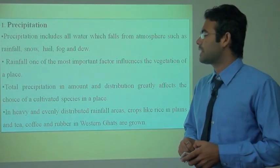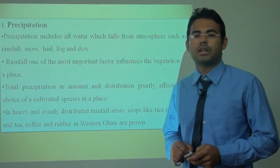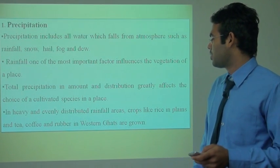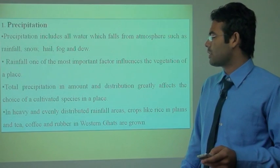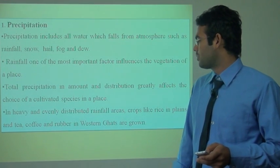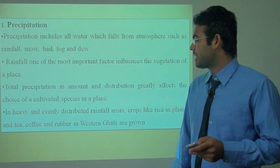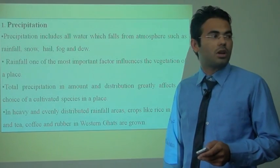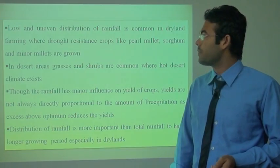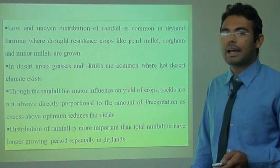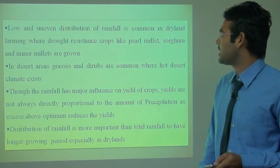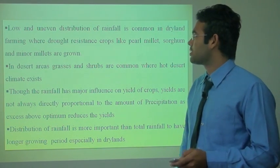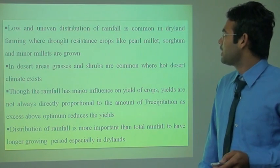The crop type depends on precipitation levels. In heavy and evenly distributed rainfall areas, crops like rice, plants, tea, coffee and rubber in the western Ghats grow well. Rice needs more water, so it grows where heavy rain occurs. In low and evenly distributed rainfall, common in dry land areas, drought resistant crops like pearl millet, sorghum and minor millets are grown, along with fruit crops like amla and custard apple.